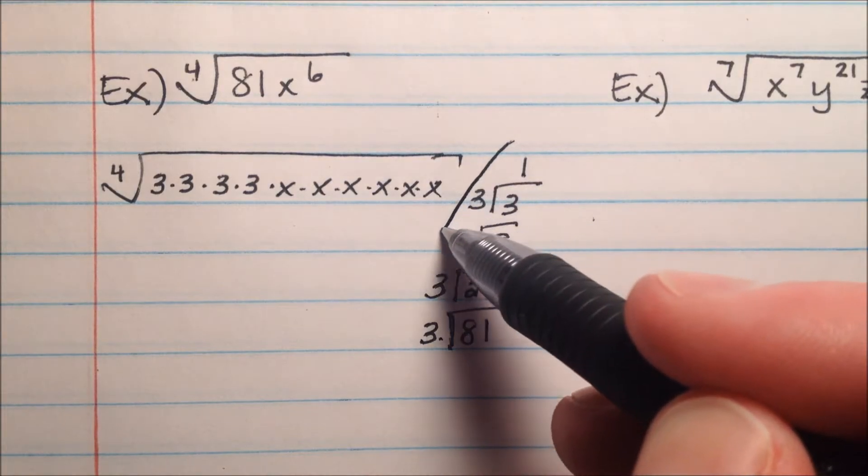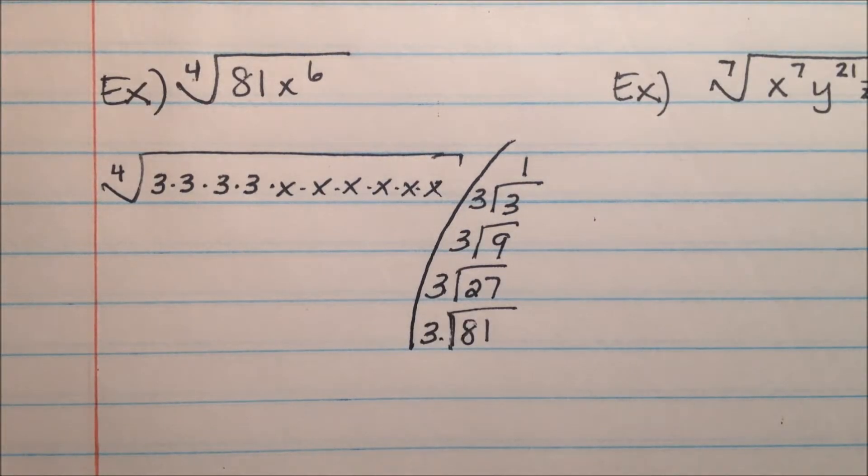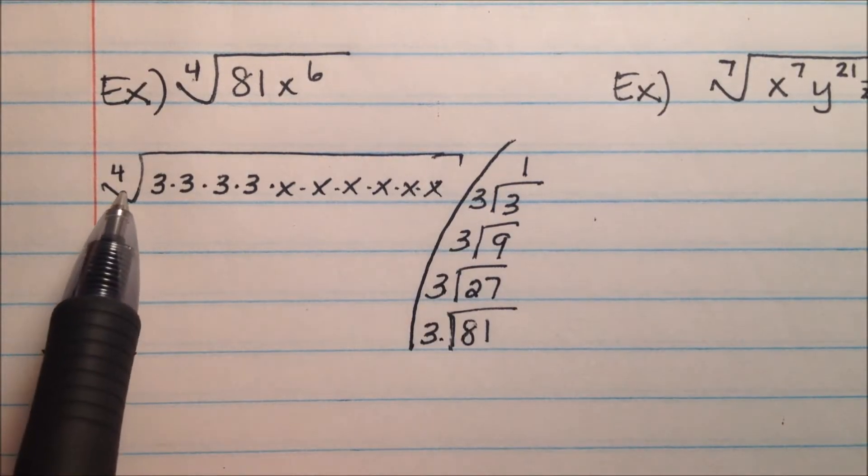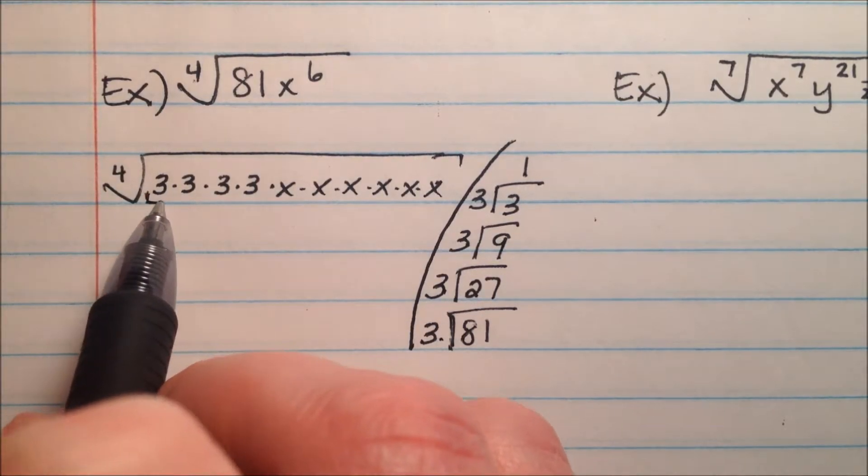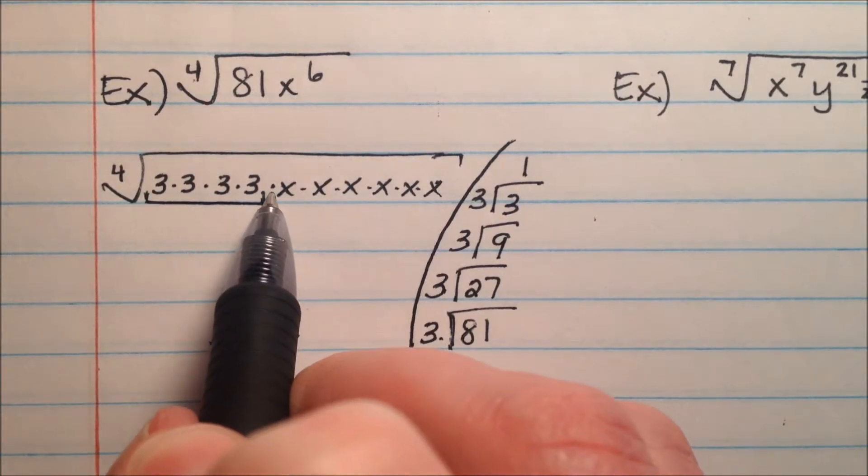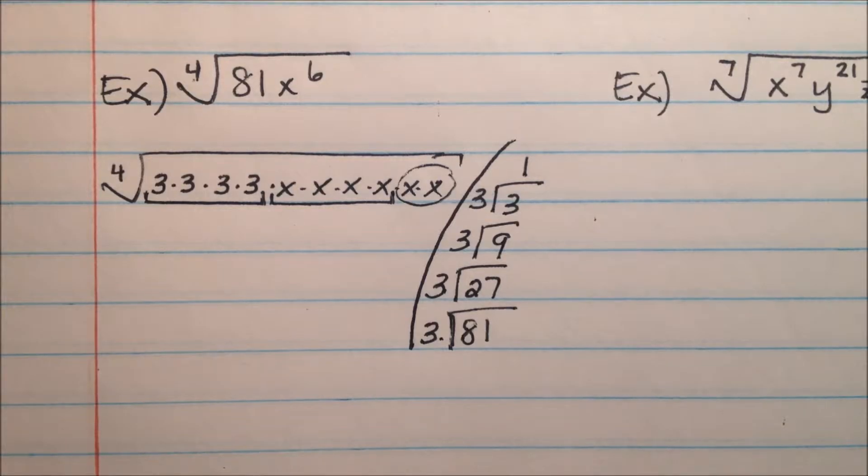Okay, I'll kind of divide this stuff up. So I'm looking now, because the index is 4, for groups of 4. So here are 4 3's, here are 4 x's, and it looks like we've got 2 x's left over that didn't get put in a group of 4, so they're going to be left inside the radical.